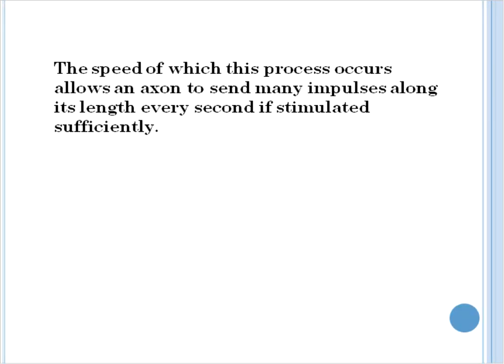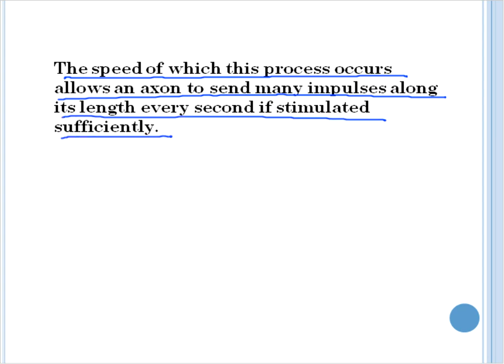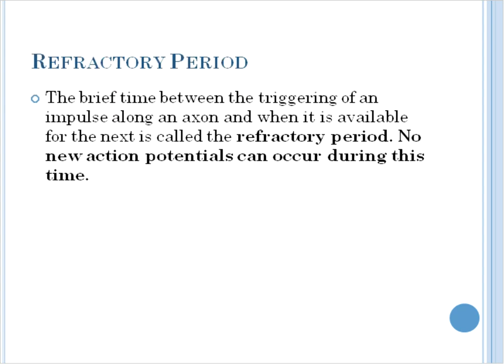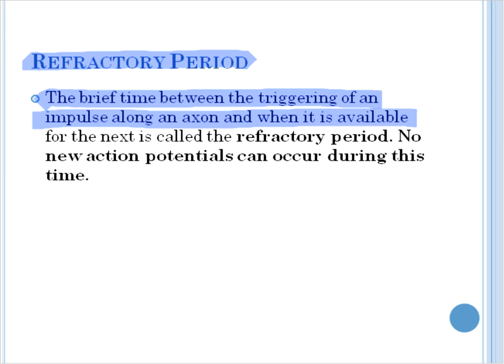Now, the speed at which this process occurs allows an axon to send many impulses along its length every second if stimulated sufficiently. Once this event has occurred, the axon will undergo what is known as a refractory period. And the refractory period is the brief time between the triggering of an impulse along an axon and when it's available for the next. During this period of time, no new action potentials can occur.